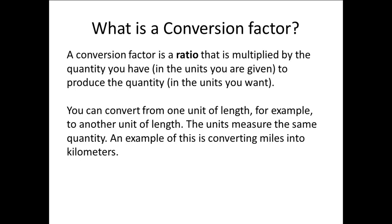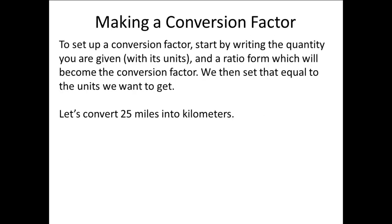An example of this is converting miles into kilometers. To set up a conversion factor, start by writing the quantity you are given with the units in ratio form, which will become the conversion factor. We then set that equal to the units we want to get. Let's convert 25 miles into kilometers. Our given quantity is 25 miles. The ratio form is a set of parentheses with a line separating the numerator and denominator, and that is equal to an unknown number of kilometers.